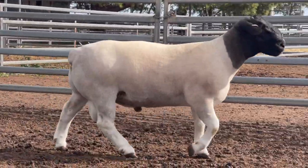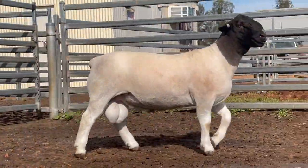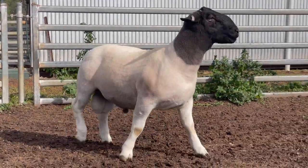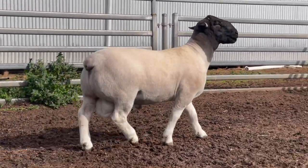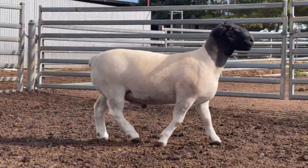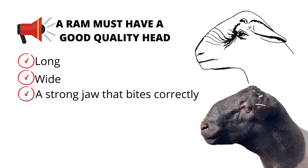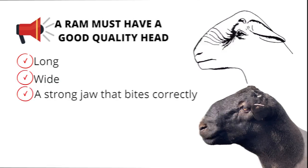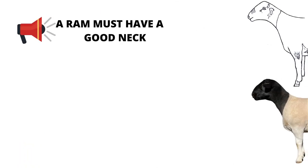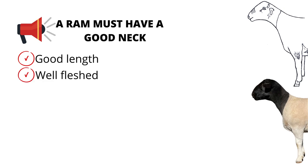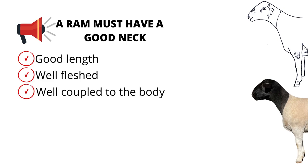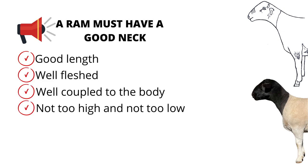But because this is such an important decision affecting your flock, we need to look at the rest of the body to make sure everything is as good as we can get it. Just to recap quickly: a ram must have a good quality head, which is long and wide with a strong jaw that bites correctly. And then we go down to the neck — we have to have a good neck, which is of a good length, well fleshed and well coupled into the body, neither too high nor too low.